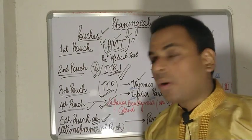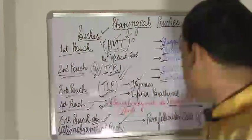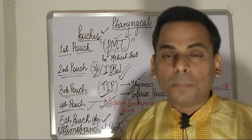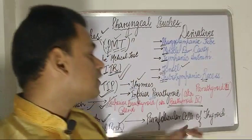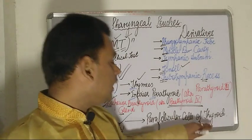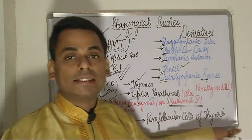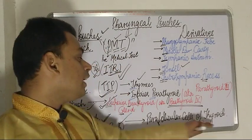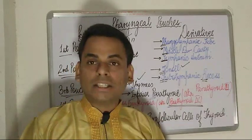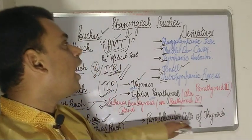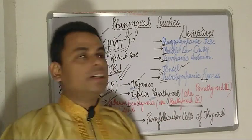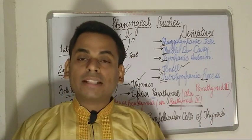Moving on to the fifth and final pouch, also called the ultimobranchial pouch: the structure derived from the ultimobranchial pouch is the parafollicular cells of the thyroid gland. These parafollicular cells are responsible for the secretion of calcitonin hormone, and they are derived from the fifth pouch — the ultimobranchial pouch.